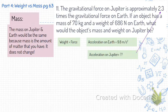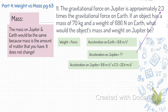My problem told me that the gravitational force on Jupiter is 2.3 times higher than the gravitational force on Earth. So if I know the acceleration of gravity on Earth, I can just multiply it by 2.3 to get that the acceleration on Jupiter is 22.4 meters per second squared.